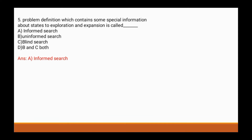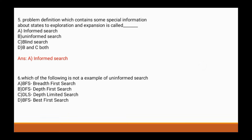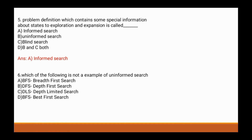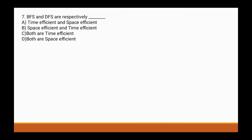Question 6: Which of the following is not an example of uninformed search? Options are: a) BFS (breadth-first search), b) depth-first search, c) depth-limited search, d) best-first search. The correct answer is d) best-first search.